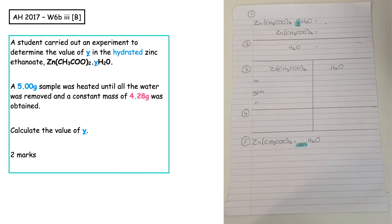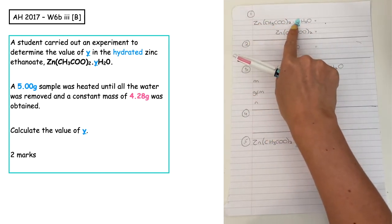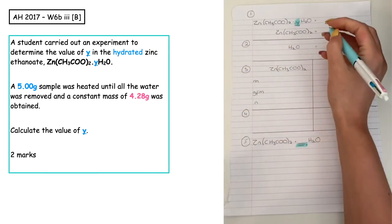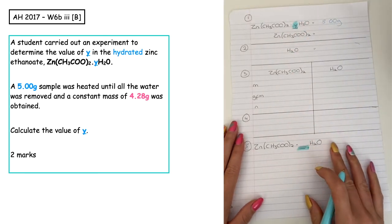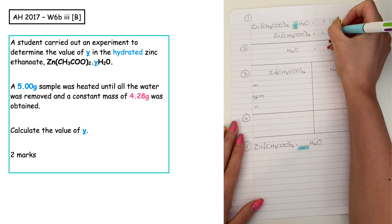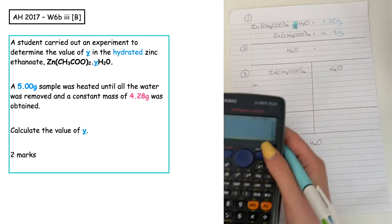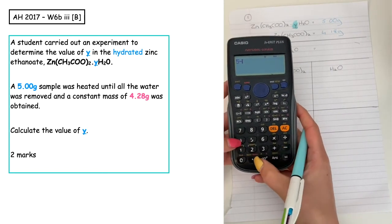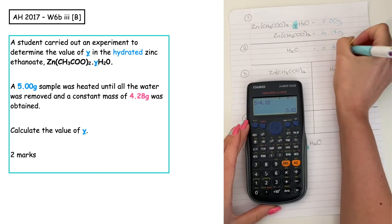This past paper question is from the Advanced Higher 2017, written paper, question 6b, part 3, section b. The question asks us to calculate the value of y for the hydrated version of zinc ethanoate. In the question they have given us a mass of hydrated zinc ethanoate as 5.00 grams. After heating to constant mass, the dehydrated mass of zinc ethanoate is 4.18 grams. So the mass of water given off is 5 take away 4.18, which gives 0.82 grams of water.